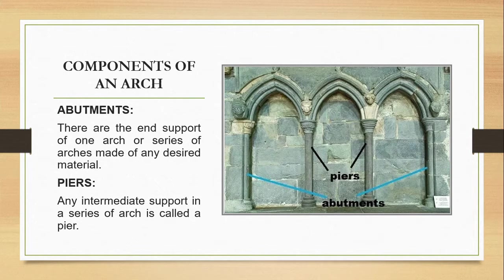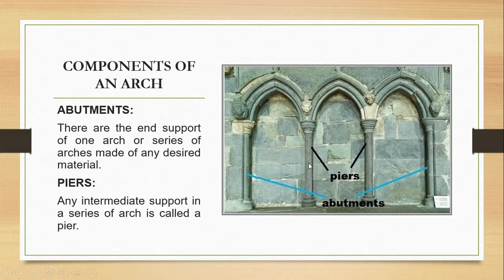Let's talk about the different components of an arch, because an arch is supported by many other members to make it a load-bearing one. Arches are mostly used when there is an opening in a wall or ceiling. The first part is the abutment — these are the end supports of an arch. In a series of arches, the end ones are termed abutments, and all the middle ones are termed piers. Any intermediate support in a series of arches is called a pier.